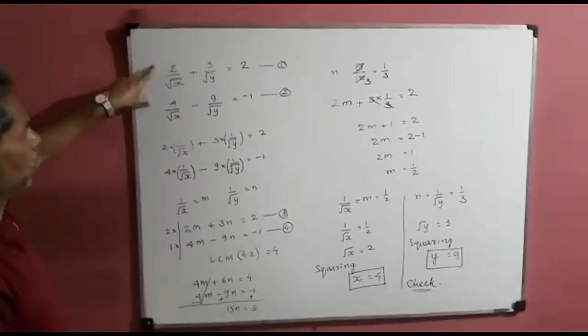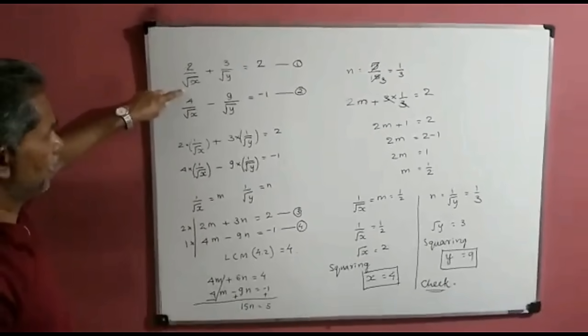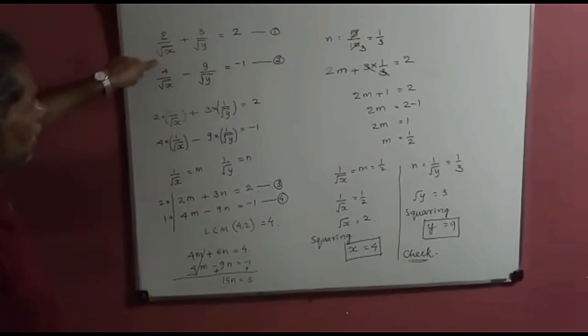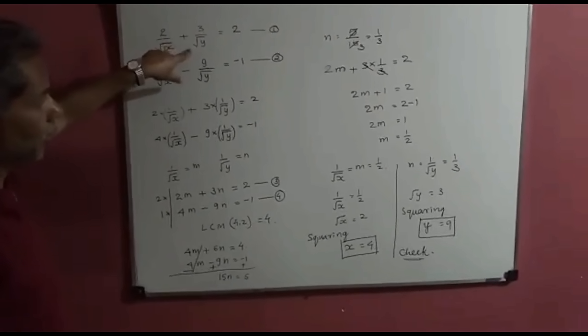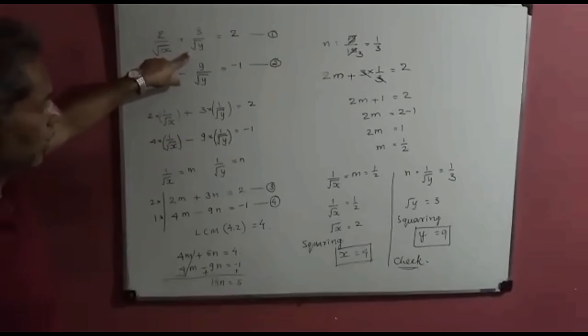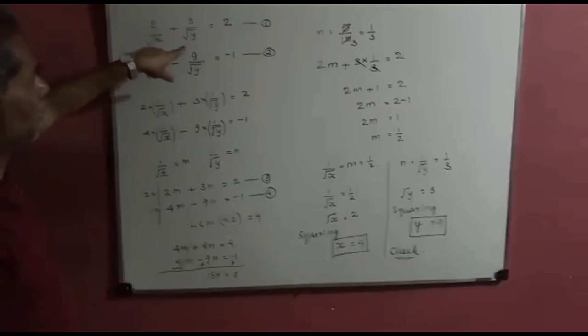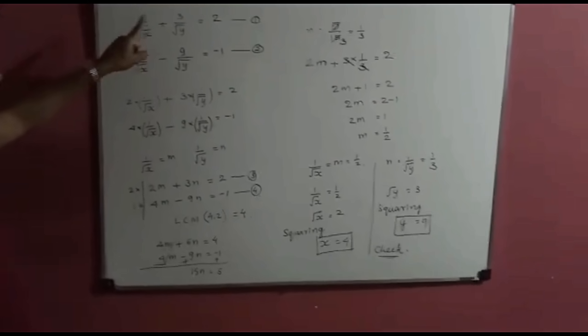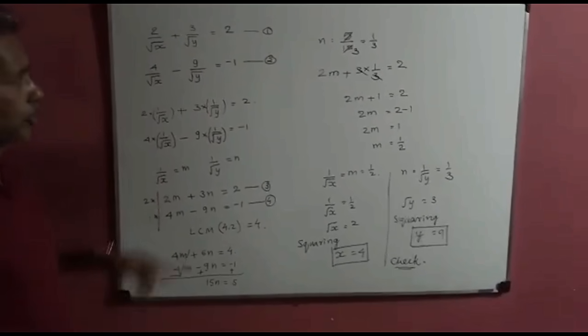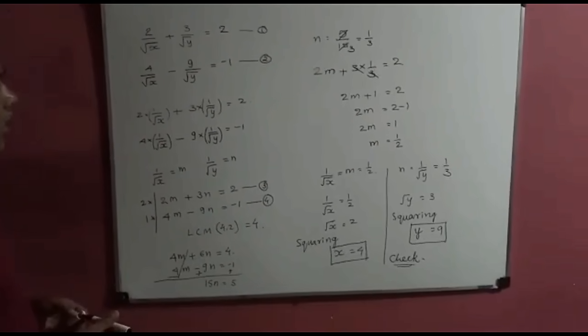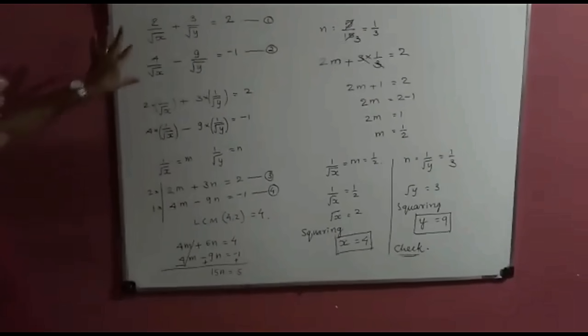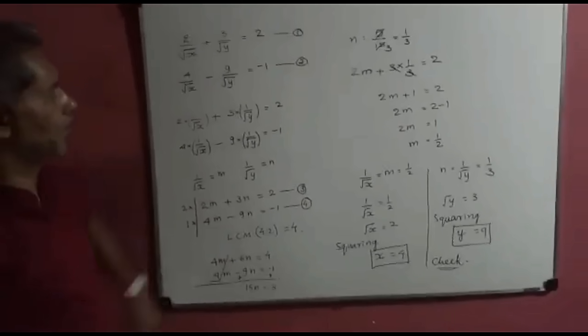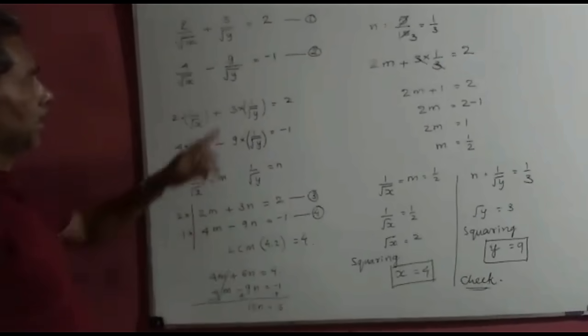We can check by putting the values back. x is equal to 4, so root x is 2; thus 2 upon root x is 2 upon 2 which is 1. And root y is 3, so 3 upon root y is 3 upon 3 which is 1. So 1 plus 1 equals 2, and thus LHS equals RHS. Similarly the second equation also gives the same result.